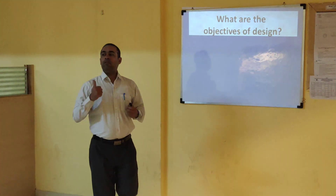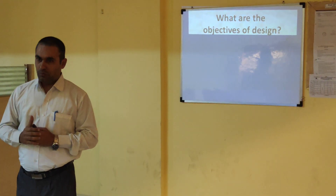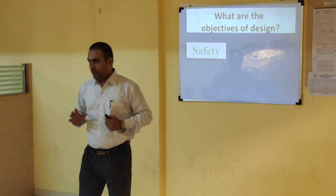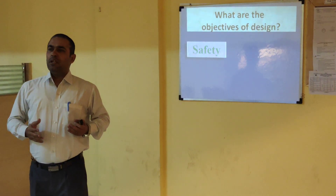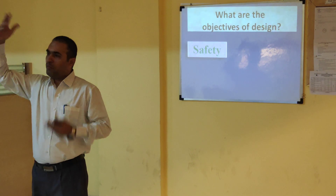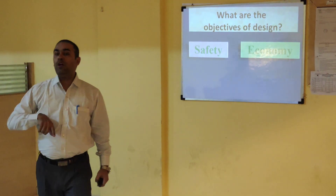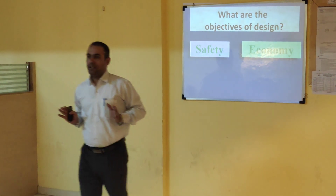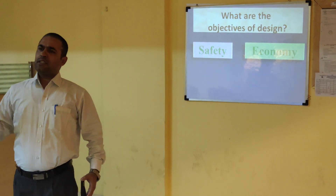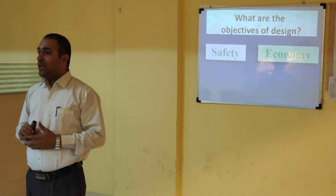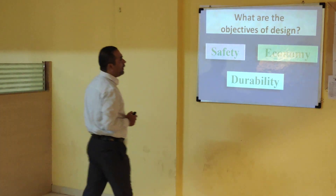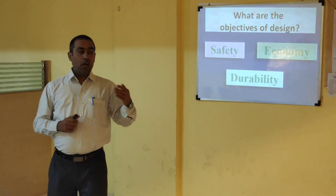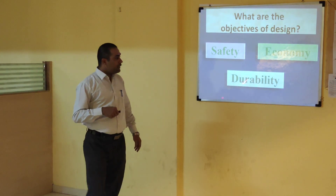When we do any design, we have objectives. The first and foremost objective is that the design must be safe. But if we simply provide any large depth, it will be safe but not economical. So the second objective is economy — safety and economy must go hand in hand. But if the design is safe and economical yet shows cracks within six months, that is not acceptable. Therefore the third objective is durability. Design should be safe, economical, and durable. We are going to study the limit state method to achieve all three.